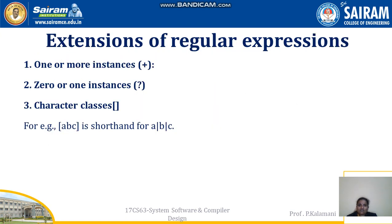Next we see the extensions of regular expressions. The plus operator (+) represents one or more instances. We already know that star (*) represents zero or more instances. The question mark (?) represents zero or one instance. Character class uses square brackets — for example, [ABC] means A or B or C. Square brackets can also represent a range, so instead of writing A|B|C|...|Z, we can write [A-Z].